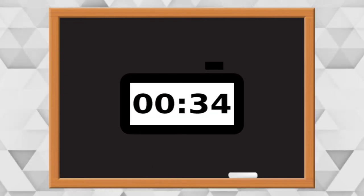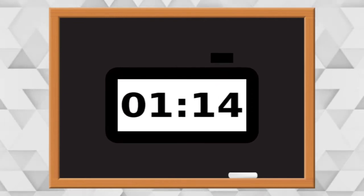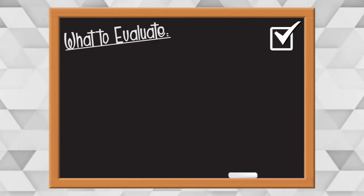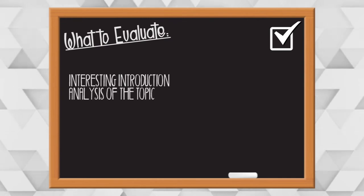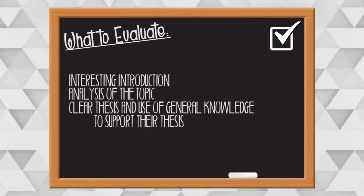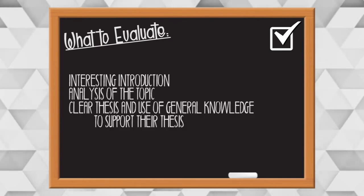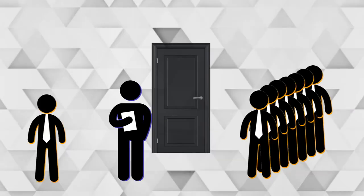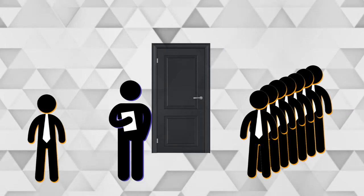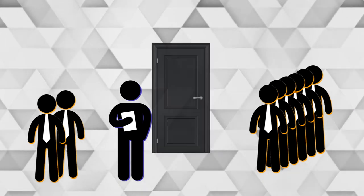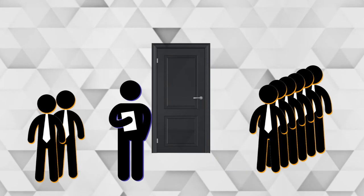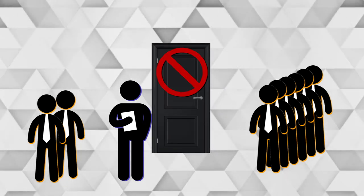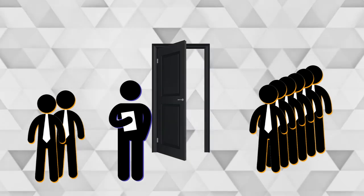When the timer sounds off at the end of the three minutes, the contestant will reset the timer to zero, counting up, and begin speaking. You should look for an interesting introduction, analysis of the topic, a clear thesis, and the use of general knowledge to support their thesis. You should also look for the traditional mechanics of speech. When the speaker has concluded their speech, the next contestant will be admitted and will follow the same procedure. You should not allow any contestant who has spoken or any observers to leave the room before the end of the round, unless the contestant is double entered in another event.